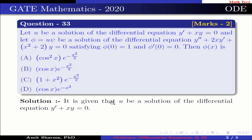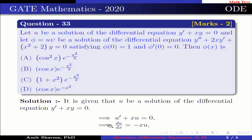It is given that u is a solution of the differential equation y' + xy = 0, which implies u' + xu = 0 because u satisfies this differential equation, which is further written as du/dx = −x·u.